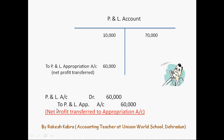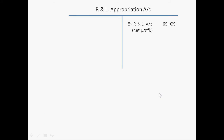This transfer entry will be posted on the credit side of P&L appropriation account also. As P&L appropriation account is created, this entry will be posted on the credit side of profit and loss appropriation account. This is our P&L appropriation account — on its credit side: by P&L account 60,000. This is the net profit, and now we need to apportion this 60,000 among the partners.